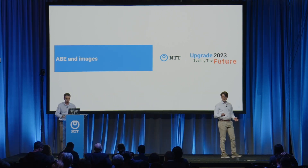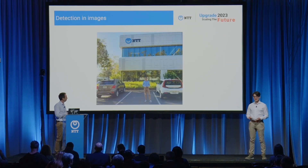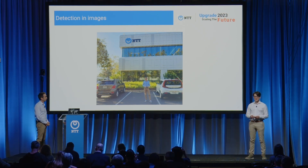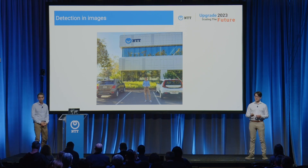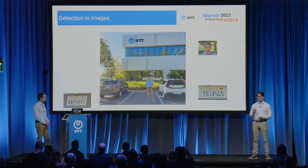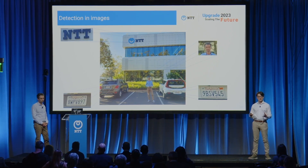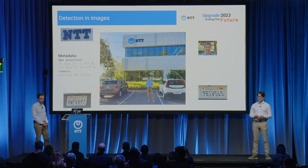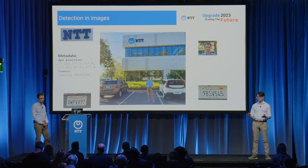For example, in an image taken in front of the headquarters of NTT Research, we can see several things that could be thought of as sensitive information. For example, you could have faces, license plates, and also textual information. Usually when a picture is taken, it is associated with metadata which can tell you a lot about where and when the photograph was taken. Now that we have a rough idea of what could represent sensitive information in an image, how do we identify those areas?